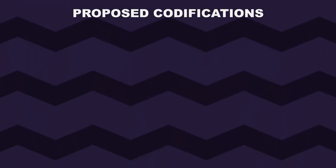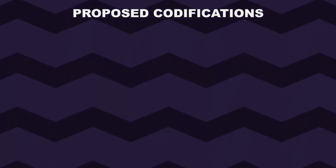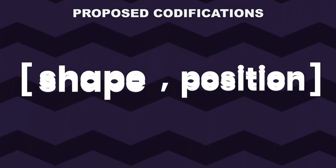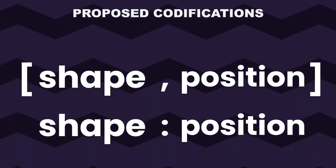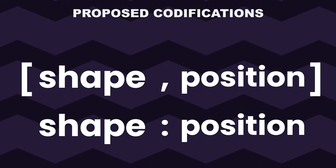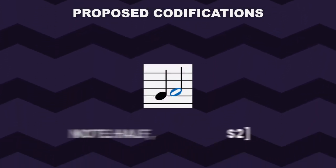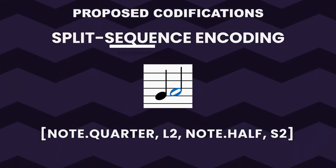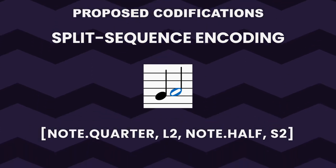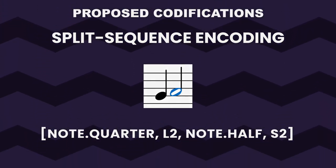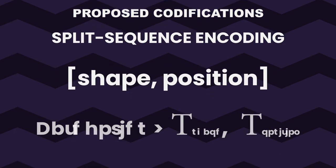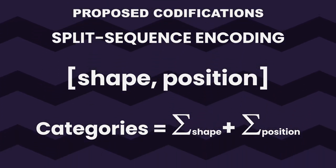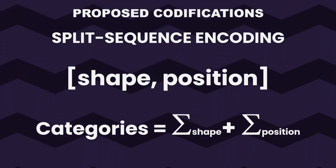Our second variation lies between the standard and the parallel encodings. While only a single predictor is used, the recognition is split into two pieces of information that must be retrieved sequentially. That is, the prediction of each symbol is represented by two consecutive categories: first the glyph, and then the position in the staff. This variation is referred to as the split-sequence encoding. This approach also significantly reduces the amount of vocabulary to be predicted, as we isolate the categories into a single group whose size is the sum of the shape words and the position words. In turn, the length of the predicted sequences is multiplied by two.